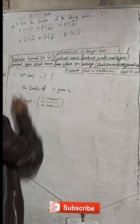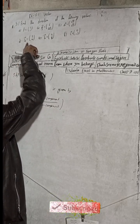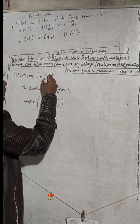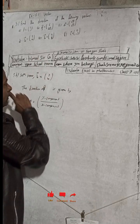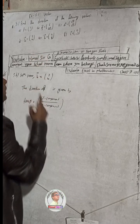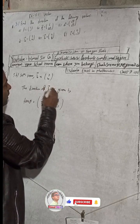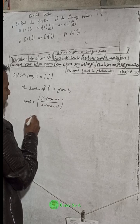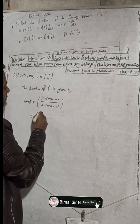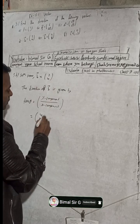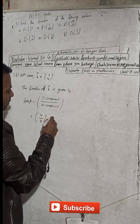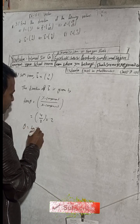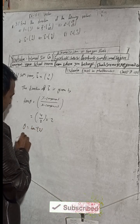For part (d), vector B is equal to (2, 4). The direction of B vector is given by tan theta equals y component divided by x component, so y component is 4 divided by x component 2, which equals 2. Therefore theta equals tan inverse of 2.